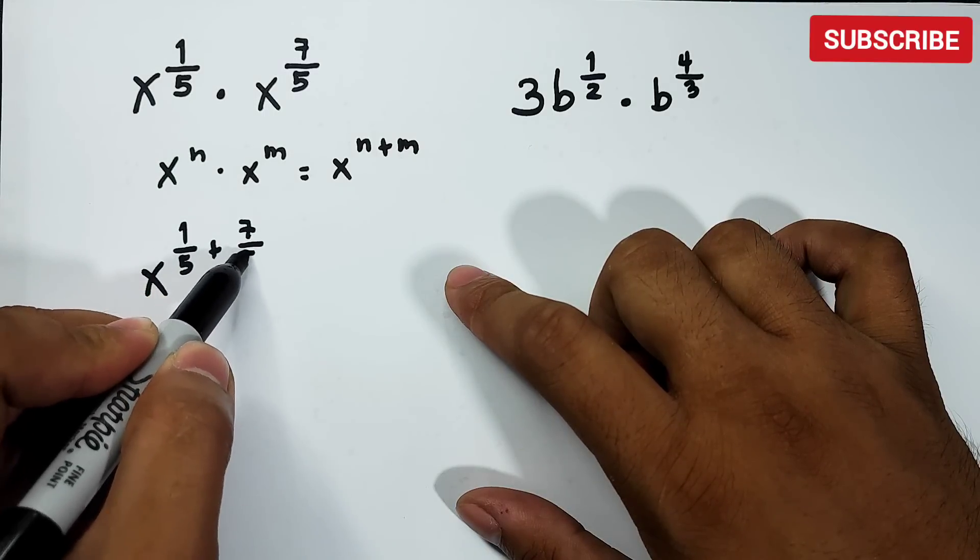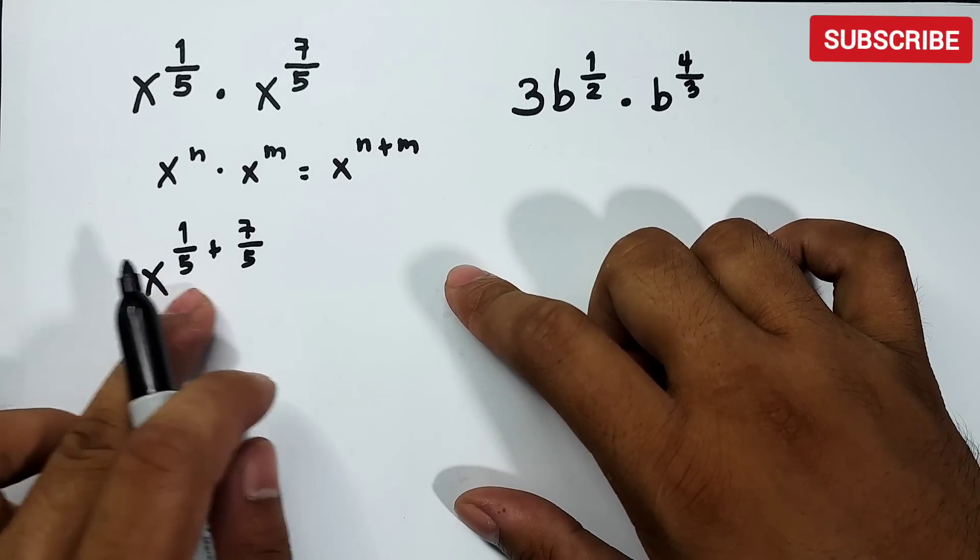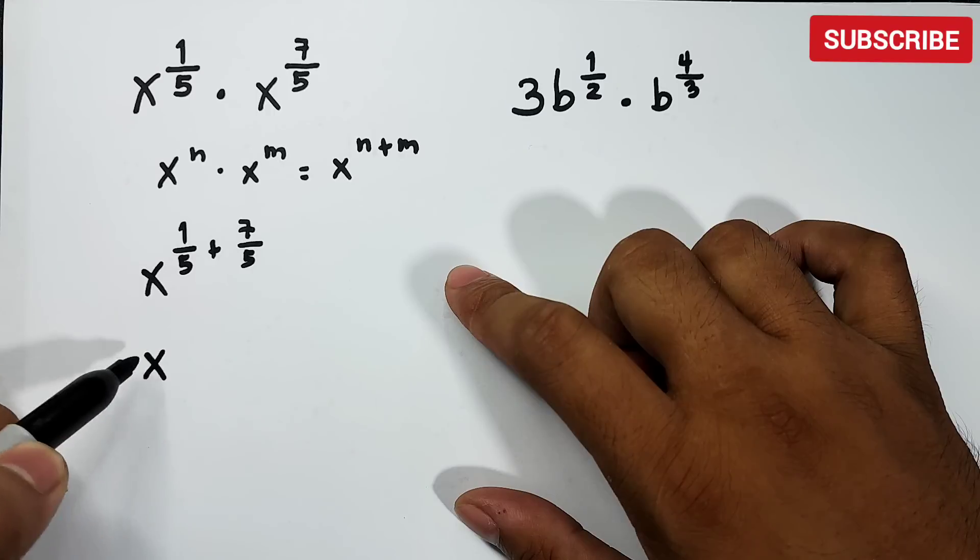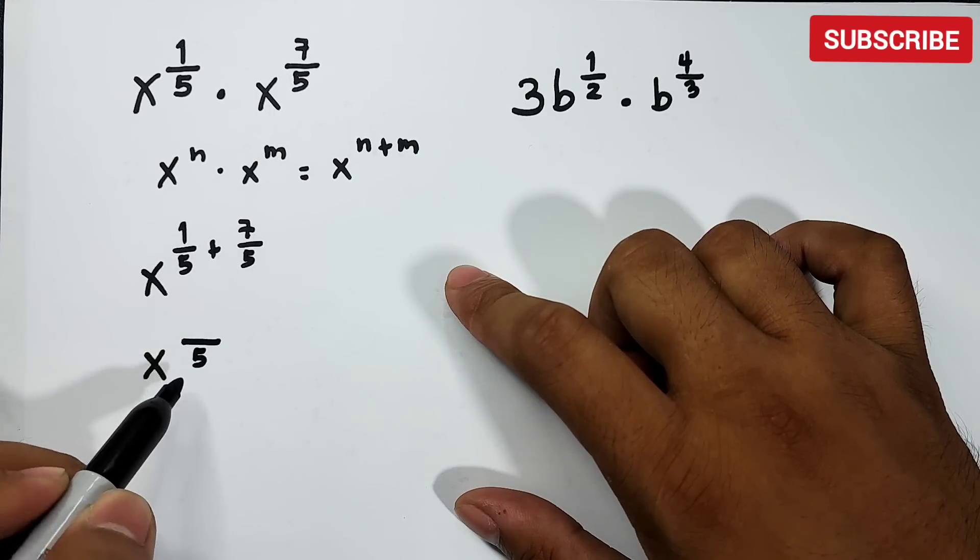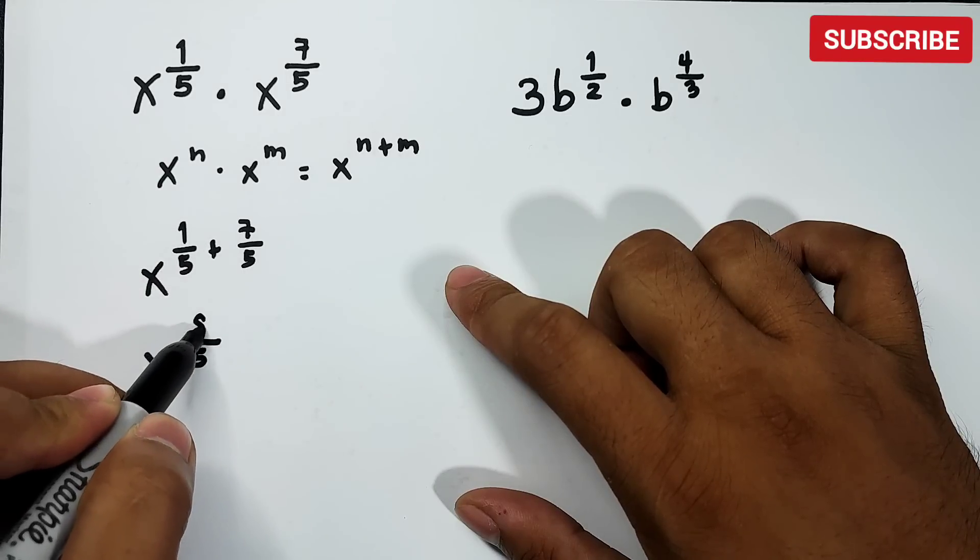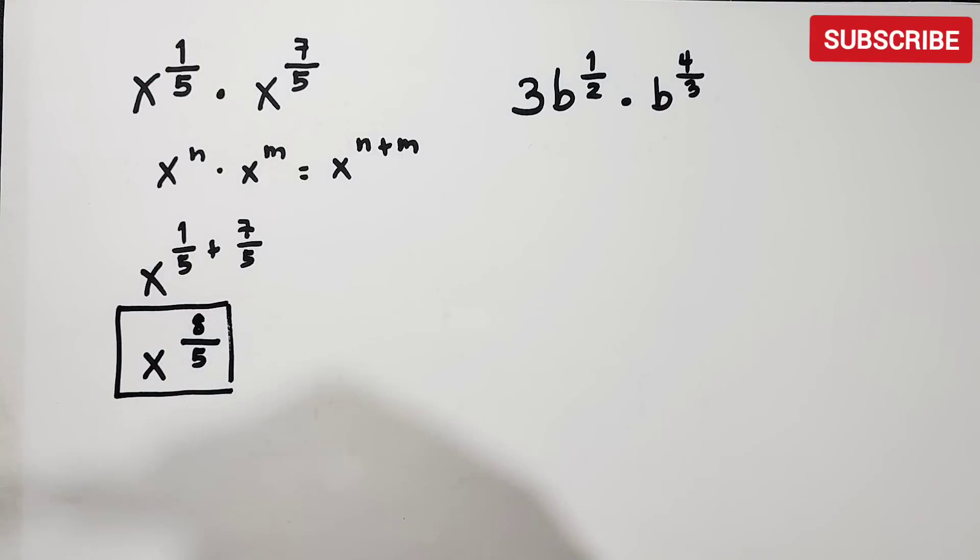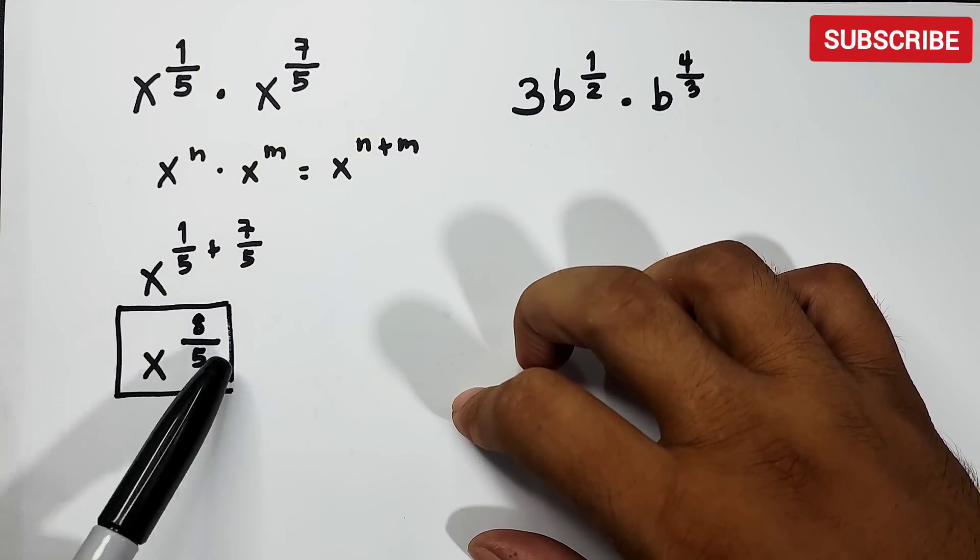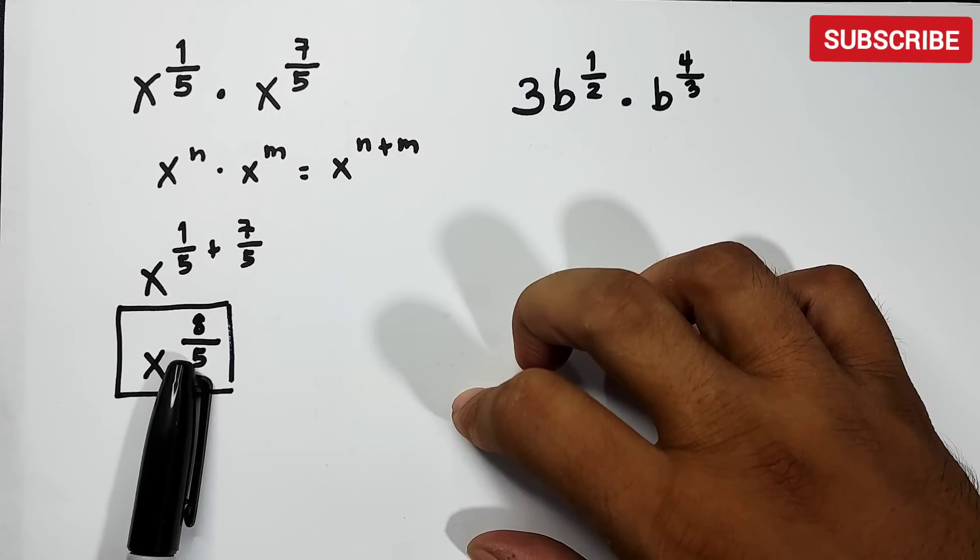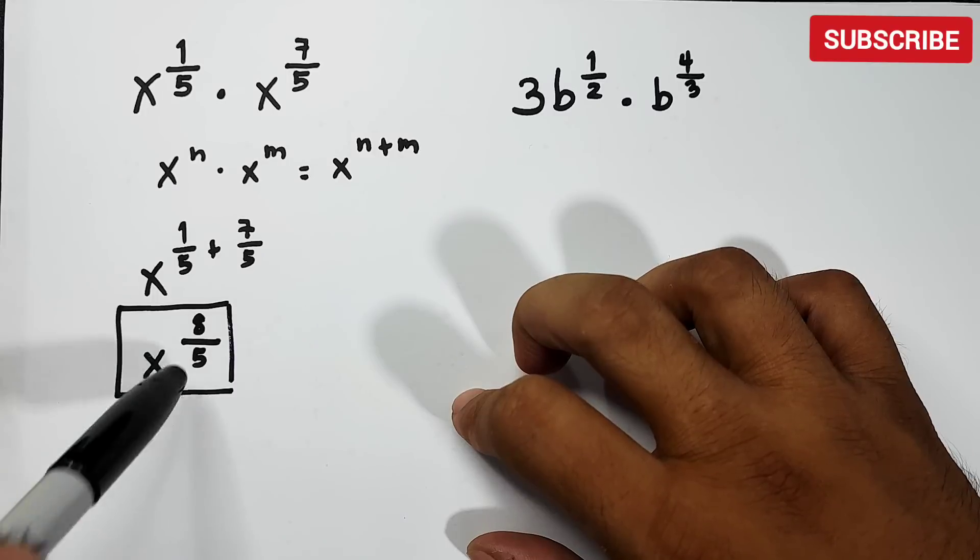plus 7 over 5. When it comes to fractions, if the denominators are the same, all you need to do is to copy the denominator. So it will become like this: x raised to, this one 5, then add the numerators which is 1 plus 7 and that is 8. So the answer here guys is simply x raised to 8 over 5. So again, let's do a recap. How did we get 8 over 5? Since the denominators are the same, we copy the denominator which is 5 and added the numerators 1 plus 7 which is equal to 8. That's it.